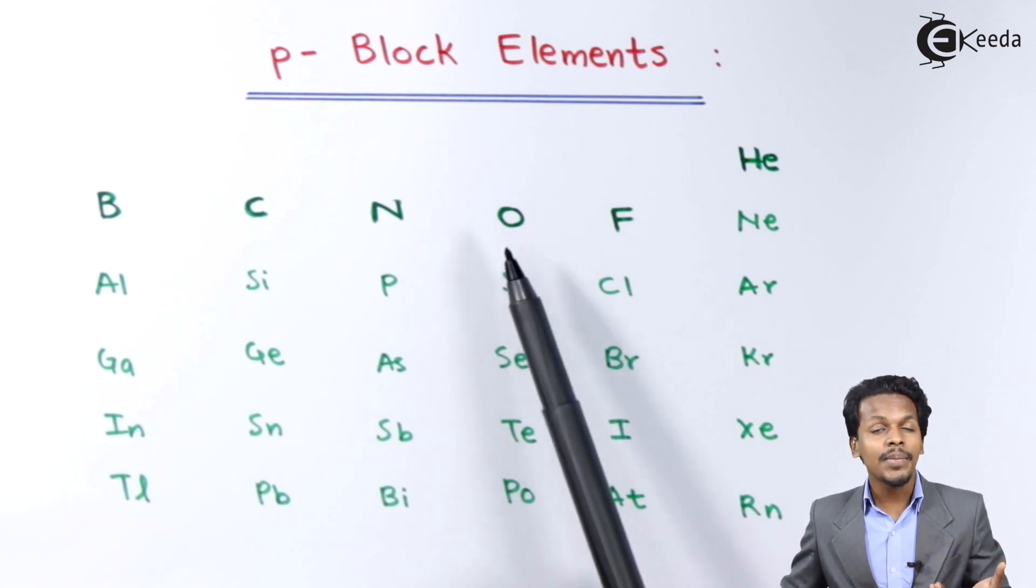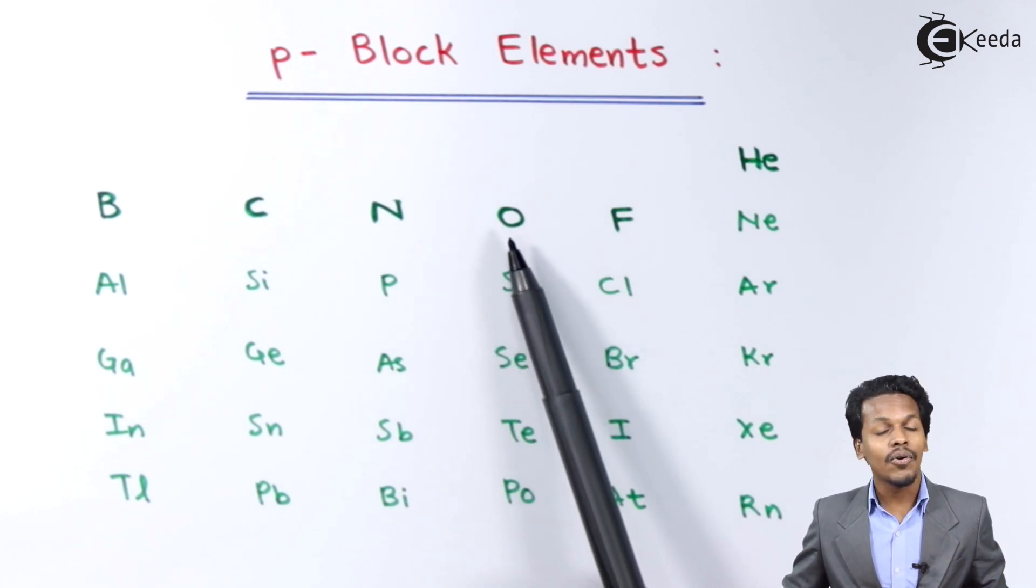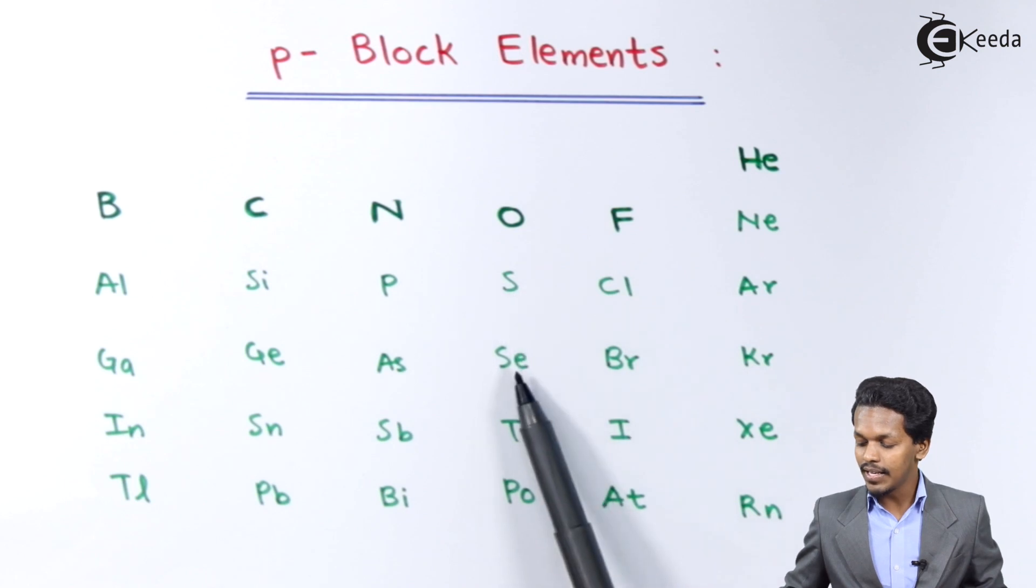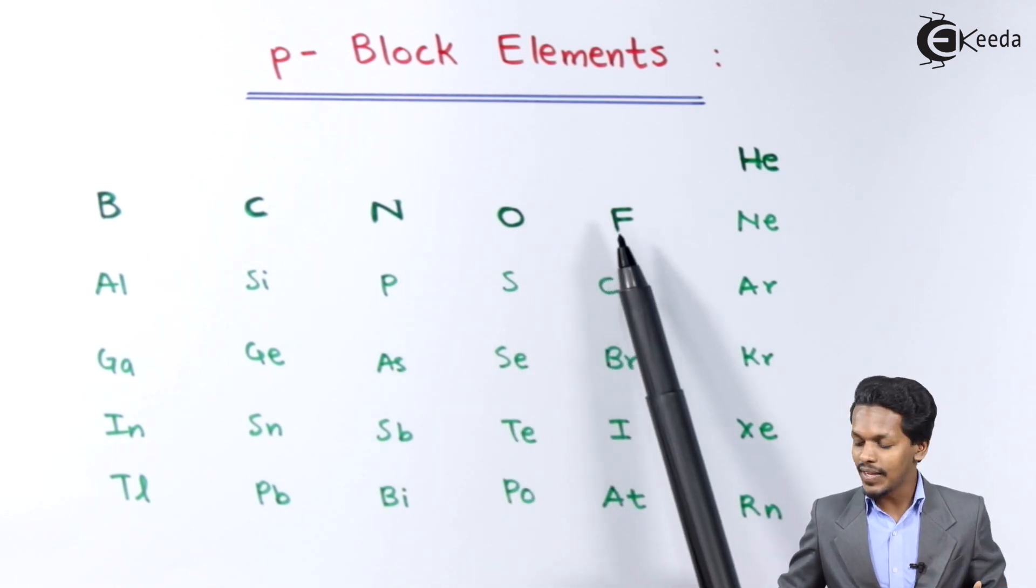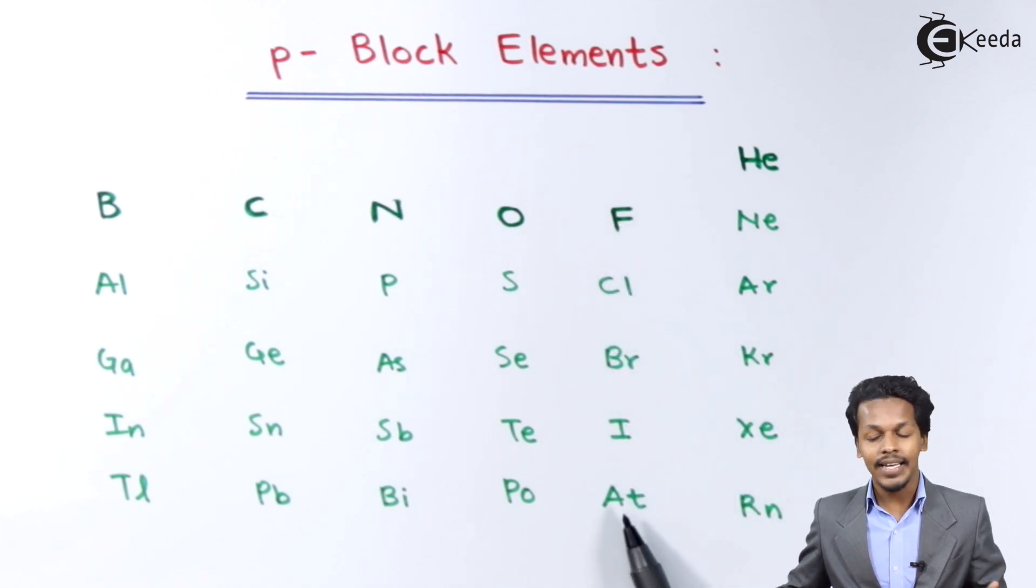After that it is Oxygen. The first element of group 16 is Oxygen, after that it is Sulphur, Selenium, Tellurium and Polonium. And for that is Halogen series, we have Fluorine, Chlorine, Bromine, Iodine, and Astatine.